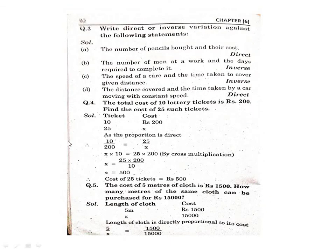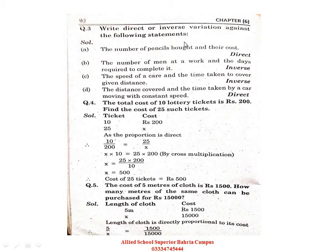Question Number 3: Write direct and inverse variation against the following statements. Here we see which type of variation fits each statement. 'Number of pencils bought and their costs' — as you buy more pencils, their cost also increases, so the relationship is similar — that means it is direct variation. 'The number of men at work and the days required to complete it' — you have to observe the relationship between the number of workers and the number of days to complete the job.